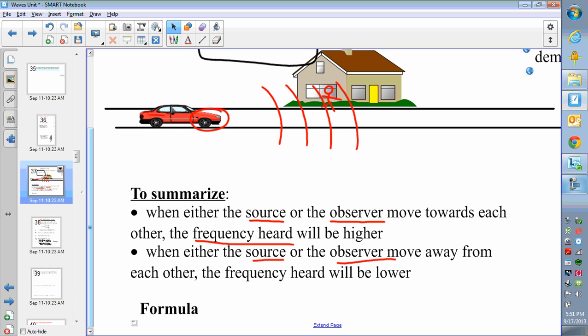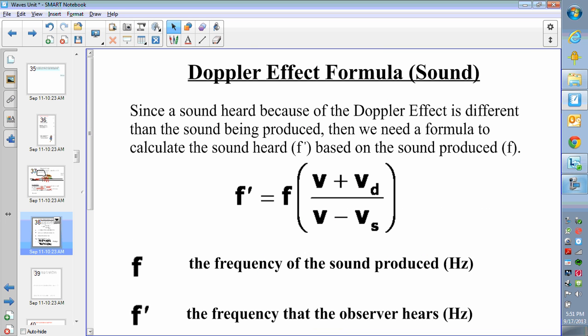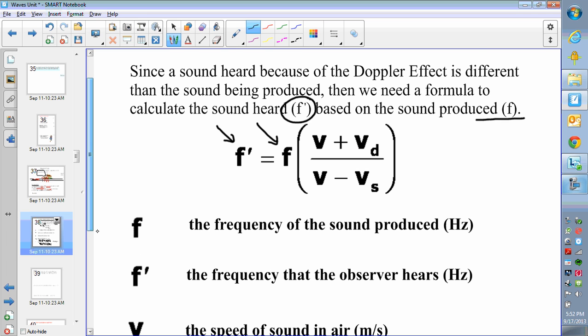If that's where you wanted to stop with Doppler shift, and just have the theory of why is it the sound waves are higher or lower, that's good enough for you. However, for us physics students, it's not going to be good enough. We're going to look at a formula to quantify this and get some actual numbers and examples to work out. So, since a sound heard, because of the Doppler effect is different than the sound being produced, we need a formula that's going to calculate the sound heard, which we're going to call F prime, F with a line on it. That'll be the sound that somebody hears, versus the actual sound that's being made. They won't be the same frequency. So, in my formula, I'll have F prime here for the sound that you hear. It's equal to the original frequency times this weird ratio that you see. So, it's a ratio of V plus VD over V minus VS.